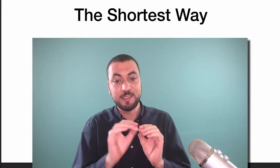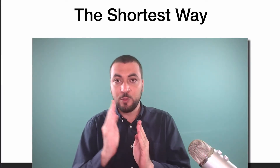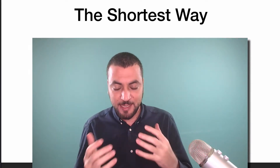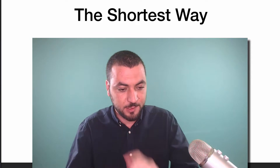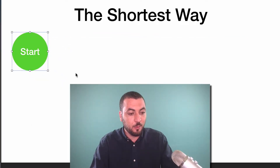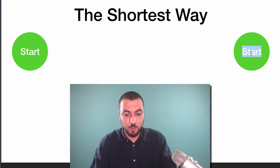So the key takeaway from this module that I want you to leave with is this: the shortest destination between you and your goal is a straight line. So what does that mean? It means, let's use the diagram here — what you need to set for yourself is a starting point and a finish point.